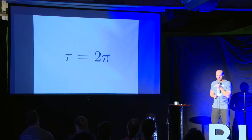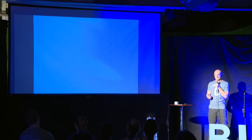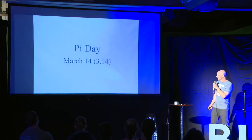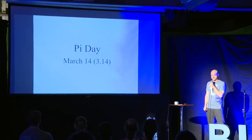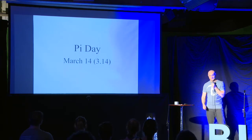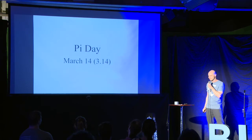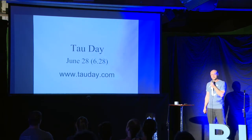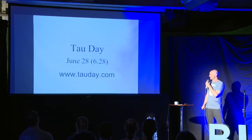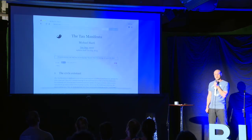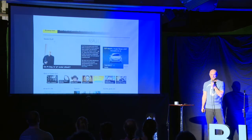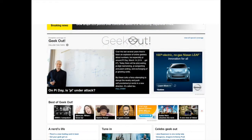Armed with this definition — tau equals 2 pi — I set out to hack geek culture and add this number, this name, to the world. Some of you may know about Pi Day, celebrated every March 14th, 3.14. So it was only natural to launch this idea on Tau Day, June 28th. On June 28th, 2010, at tauday.com, I launched the Tau Manifesto, and it took off. It's got almost 45,000 likes on Facebook. The next Pi Day I was featured on CNN's geek out blog, 'Pi Day: Is Pi Under Attack?' And it has become a thing that people know about.